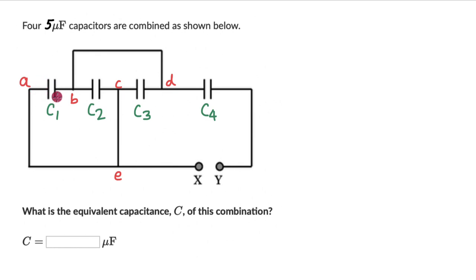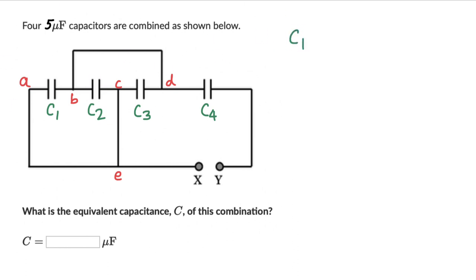First, let's try and understand the potential difference across C1 and across all of these capacitors, so that we know if they are in parallel. Across C1, the potential difference is VAB. Across C2, this would be VBC.